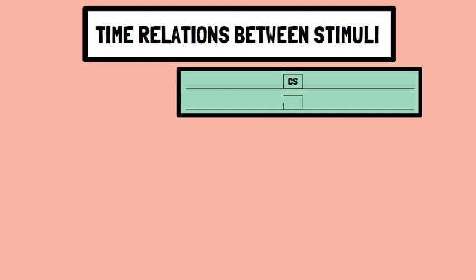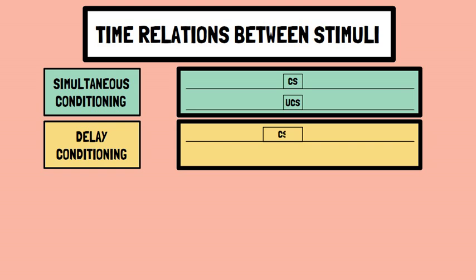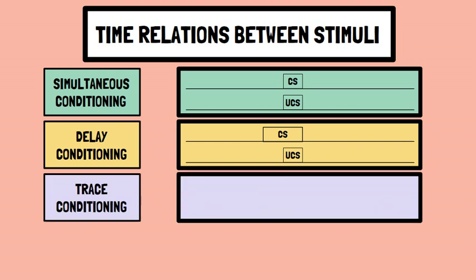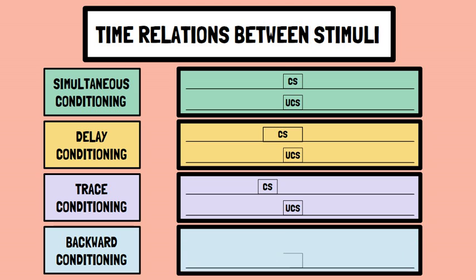When the conditioned stimulus and unconditioned stimulus are presented together, it is called simultaneous conditioning. In delayed conditioning, the onset of the conditioned stimulus precedes the onset of the unconditioned stimulus, and the conditioned stimulus ends before the end of the unconditioned stimulus. In trace conditioning, the onset and end of the conditioned stimulus precedes the onset of the unconditioned stimulus with some time gap between the two. In backward conditioning, the unconditioned stimulus precedes the onset of the conditioned stimulus. Delayed conditioning is most effective in acquiring a conditioned response, while simultaneous and trace conditioning require greater acquisition trials. Acquisition under backward conditioning is very rare.